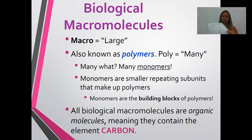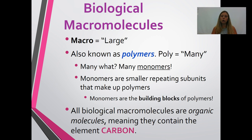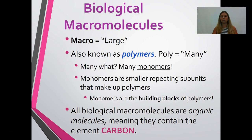Macromolecules: macro means large, so we're talking about large molecules found in all living things. These are also known as polymers — poly means many, so they're large molecules made up of many monomers. Monomers are the smaller repeating subunits that add together to make the polymer. Think of a building as your macromolecule and every brick as a monomer — you put together lots of bricks to make a large building.